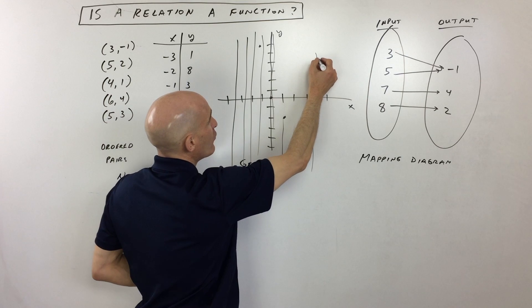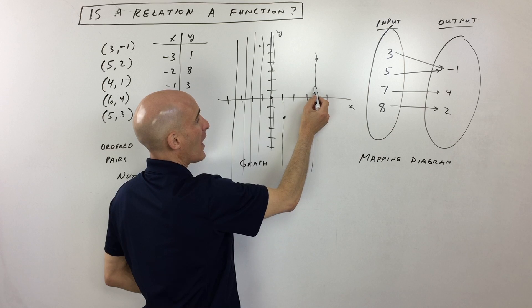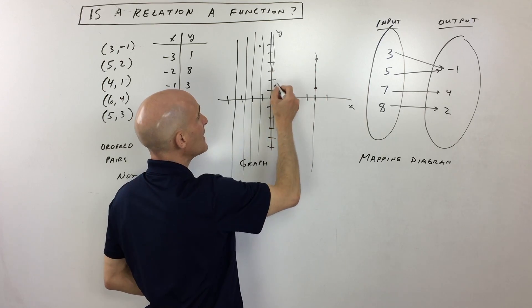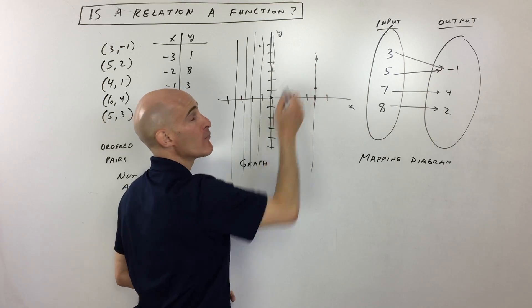Whereas if I put another point right here, for example, what it means is that for this X value four, I'm getting a Y value of one and I'm getting a Y value of four. So for that particular input, that X value, I'm getting more than one Y value.